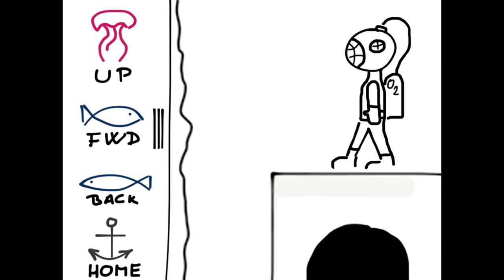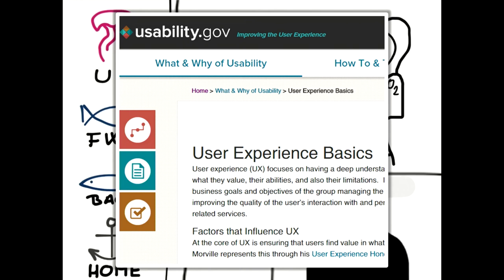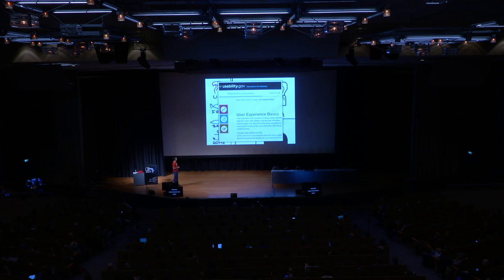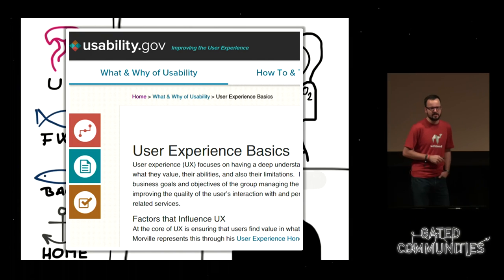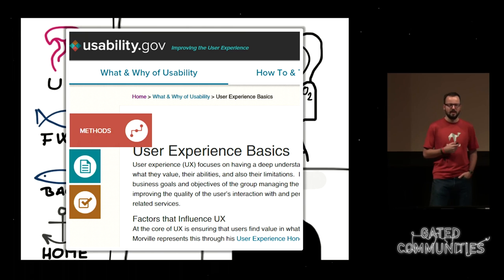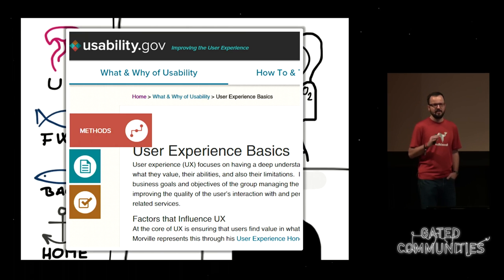If you add labels like this, nothing will help — so please change them to something meaningful. A practical example: on usability.gov, on the left side there are three icons. I can guess they're some kind of documents, but I'm not sure. What's definitely wrong is that you have to hover over them to see what's inside. From my perspective, this is a terrible mistake — hiding information and hiding labels. Please add meaningful labels everywhere.